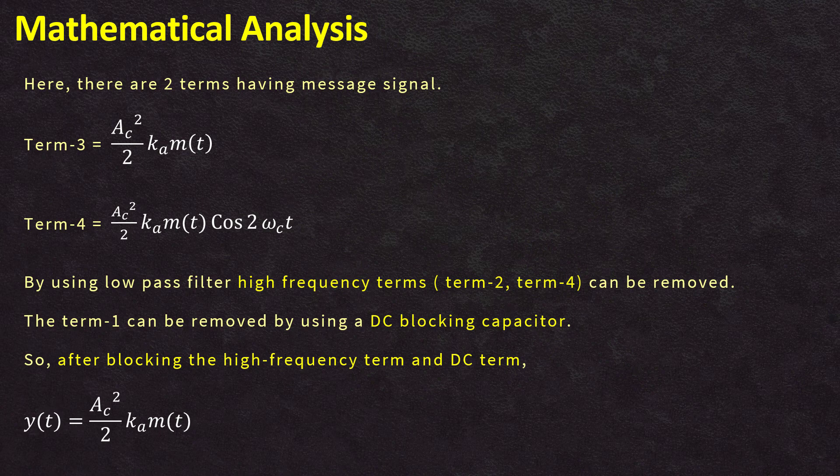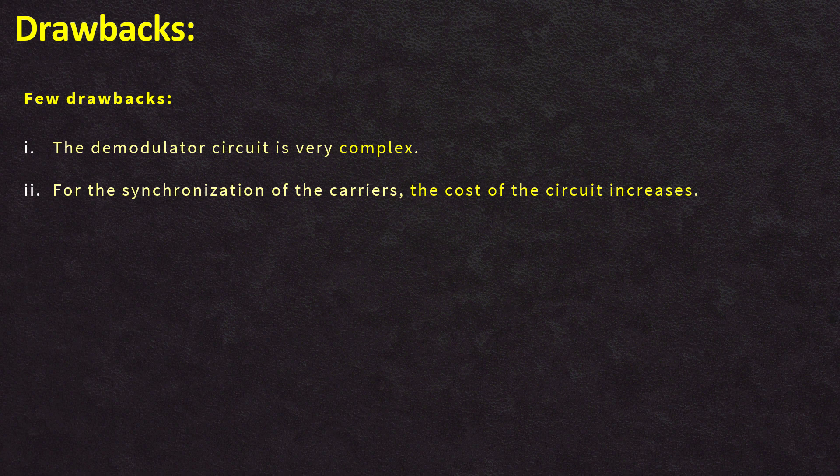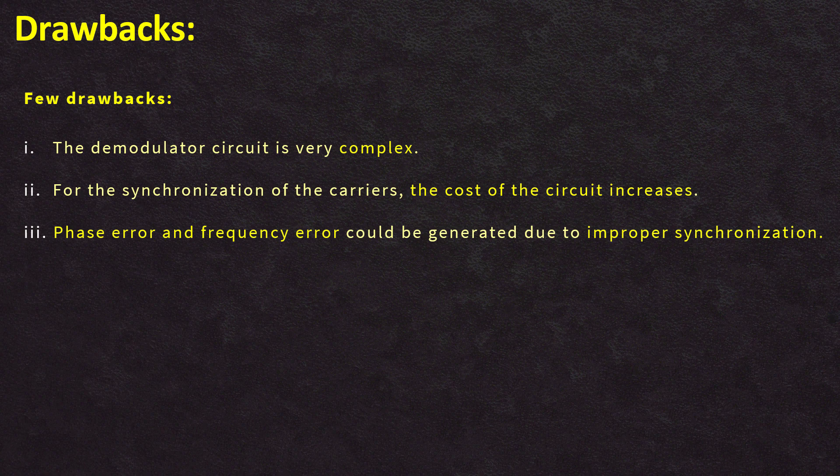Demodulation of the amplitude modulated signal using this method is very difficult due to the synchronization required between the carrier of the incoming amplitude modulated signal and the local oscillator. The drawbacks of this detection process are: the demodulator circuit is very complex; the cost of the circuit increases due to carrier synchronization; and phase and frequency errors can be generated due to imperfect synchronization.